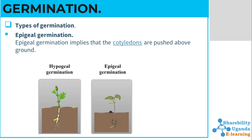For epigeal germination, the cotyledons are pushed above the ground — not like hypogeal germination where cotyledons remain in the ground. We have two pictures below which illustrate hypogeal and epigeal germination. In the first picture we can see that the cotyledon remains in the ground — that yellow thing next to the roots. In the second picture the cotyledon is above the ground — that small brown thing you see above the ground.